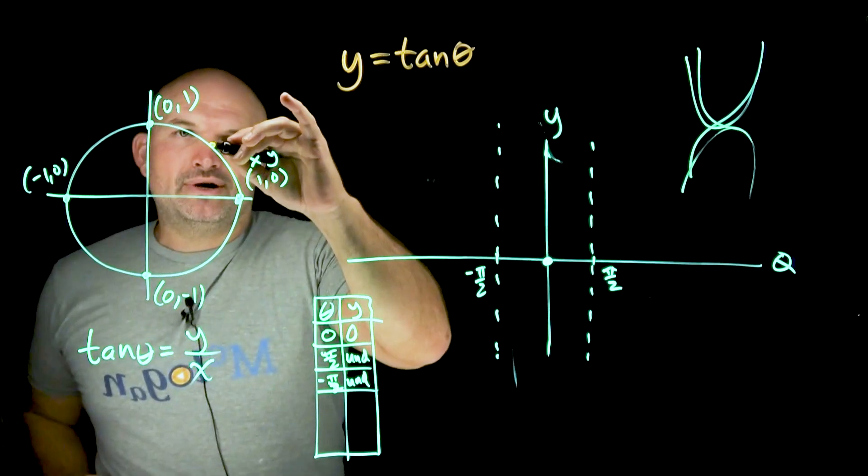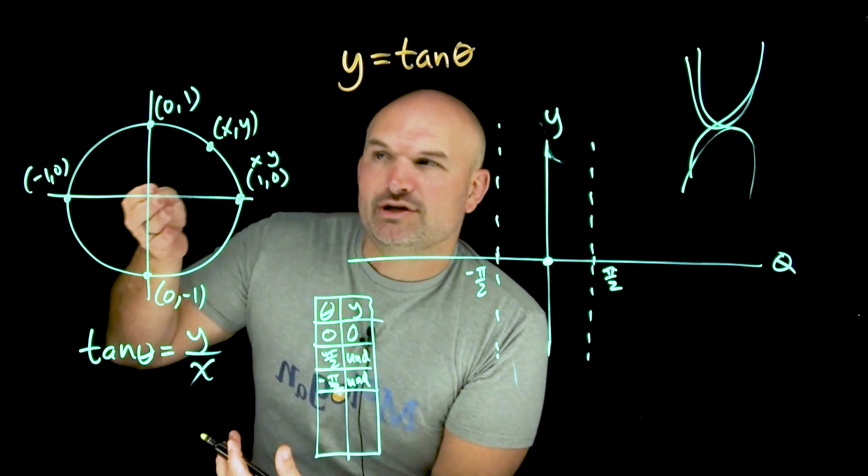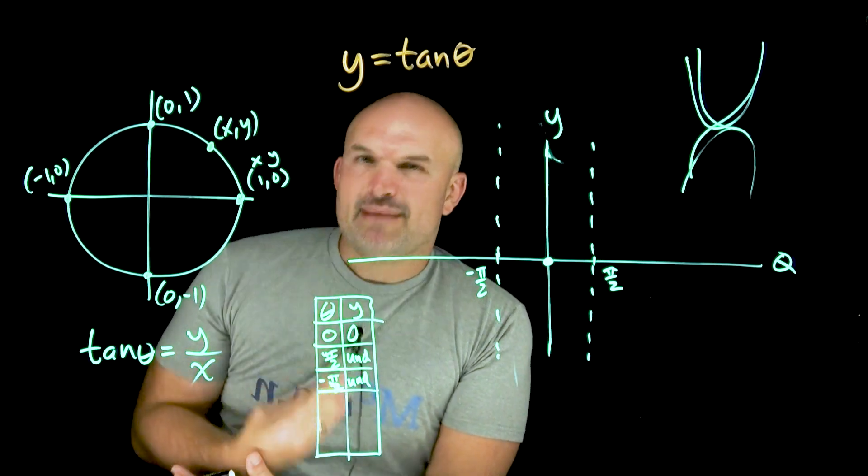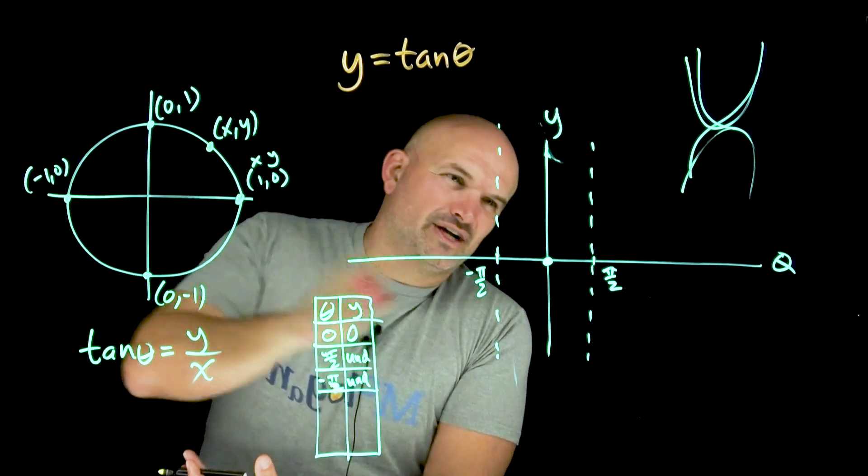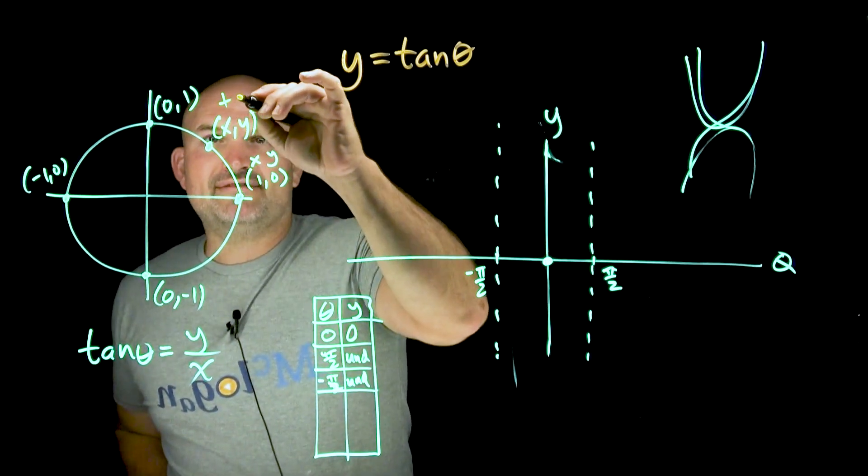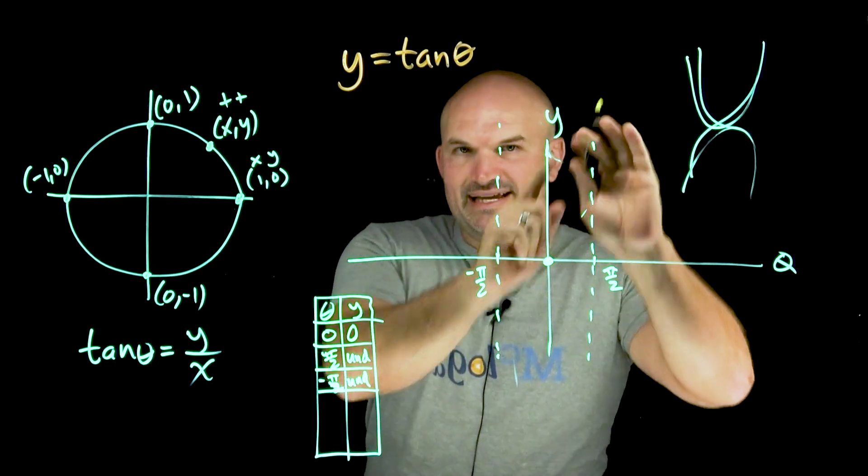So again, let's look at our coordinate pointer. If I had any point x,y. Now, you might be familiar. You might remember what the coordinate points are in that first quadrant. One thing I want you to recognize is it doesn't even matter. Like, yeah, you can use them. You can use a calculator and find the coordinate point and then plot them. But all I want you to understand is in the first quadrant, you have a positive point over a positive point. So I know whatever my ratio is going to be positive.